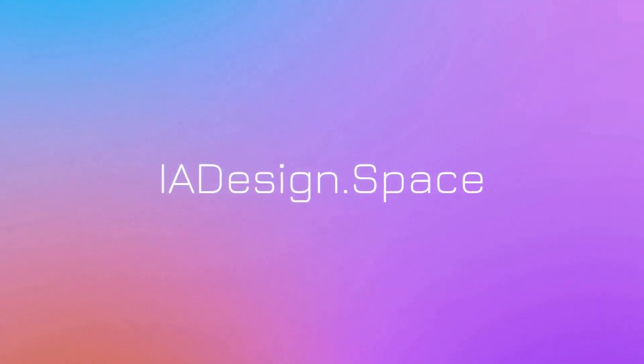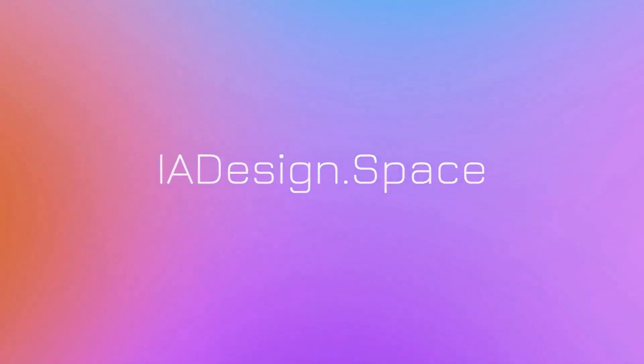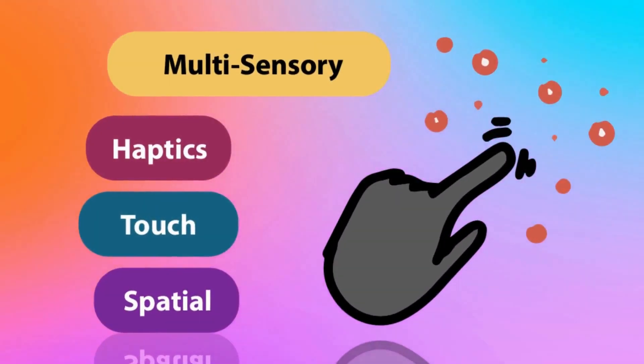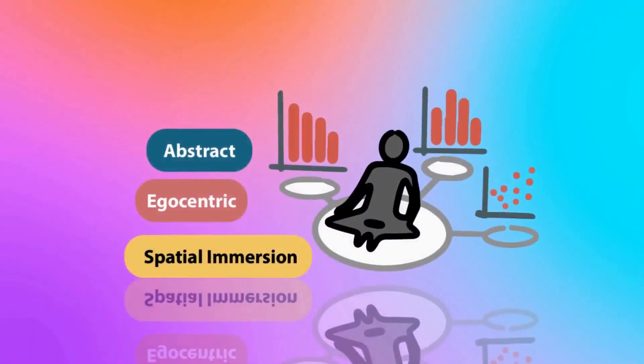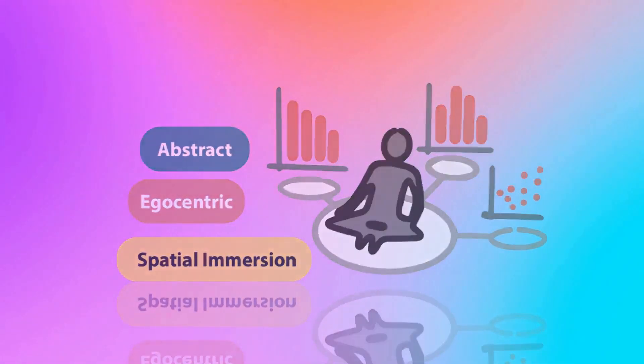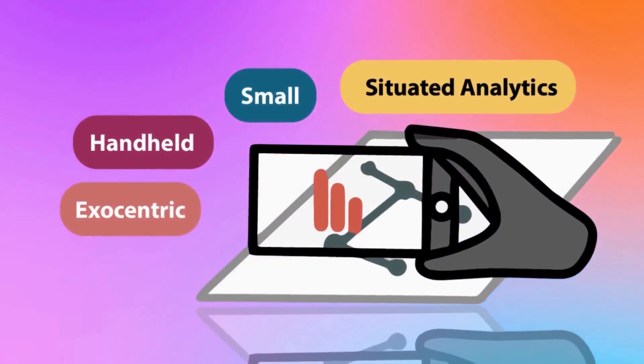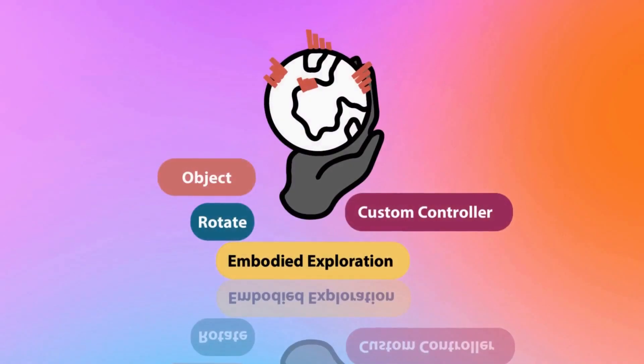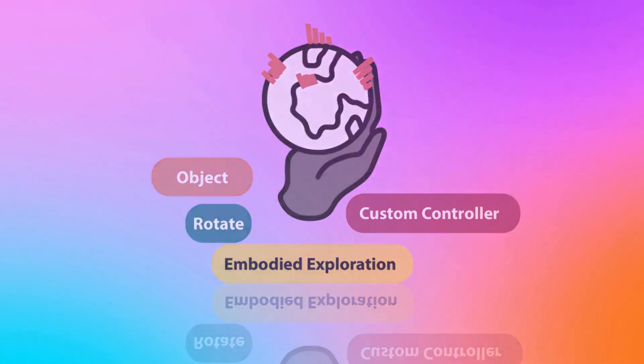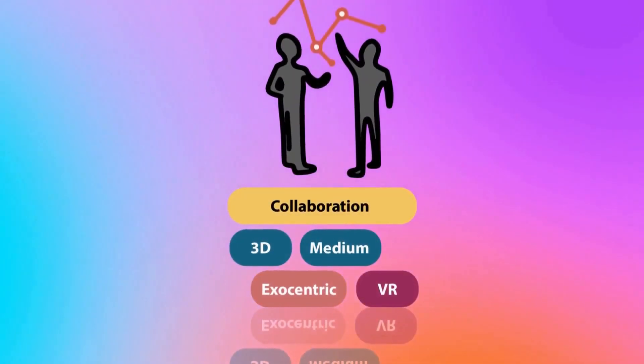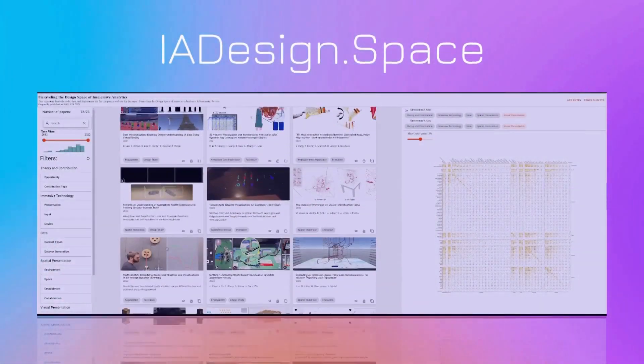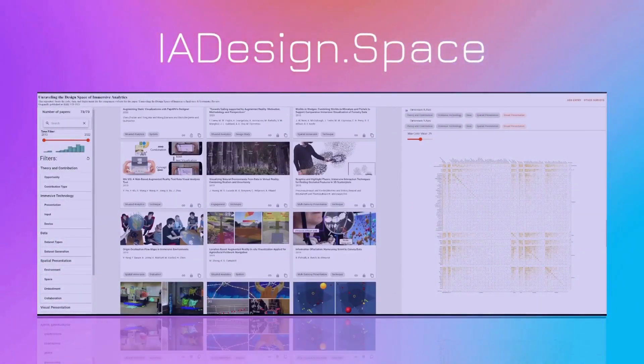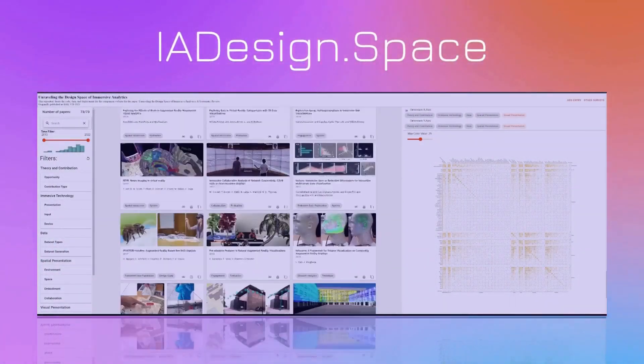The design space of immersive analytics is vast and daunting, making it difficult for researchers, senior and junior, to navigate. This paper presents a systematic literature review of immersive analytics, visualizations, and systems, aiming to identify and categorize the primary dimensions influencing their design. Explore and contribute to the survey data through our open source repository and website at iadesign.space.